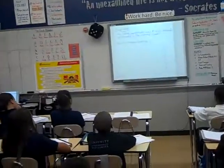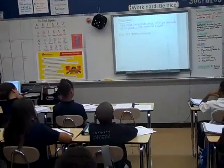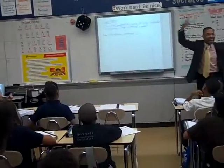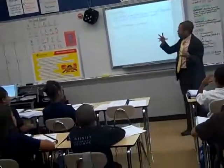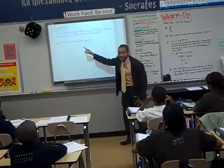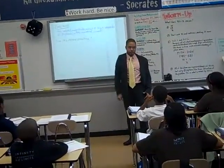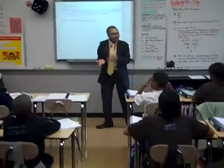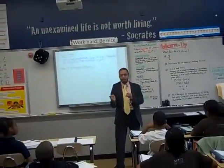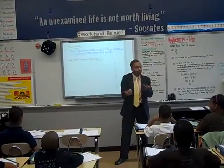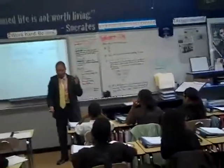So now, place value. Place value is the value — value means the magnitude, how big it is, the size of that. The value of the digit depends on its place in the numeral system. So where is that digit placed? That's what we call a place value. Place value — now I get it. It's because it's the place, and it has a certain value based on where it's placed.